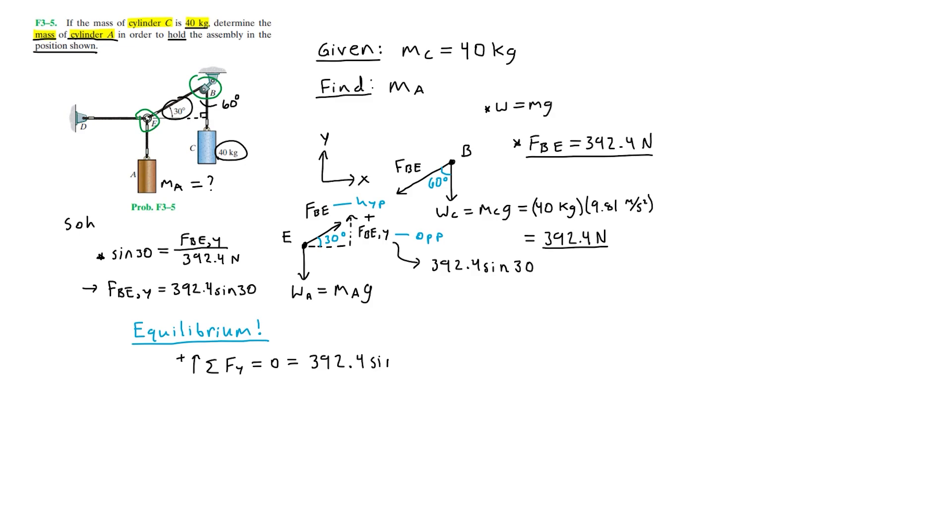Then we have the weight, which in this case will be minus MA times g, which is 9.81 meters per second squared. This is negative since weight points downwards. Isolating MA here, we will get MA equals 196.2 newtons over 9.81 meters per second squared.